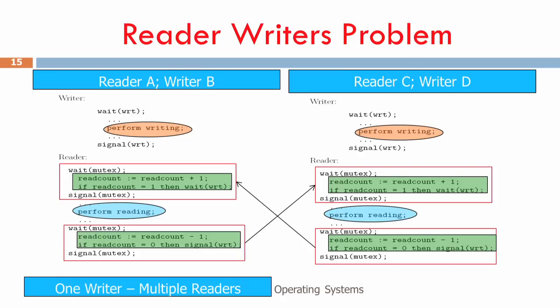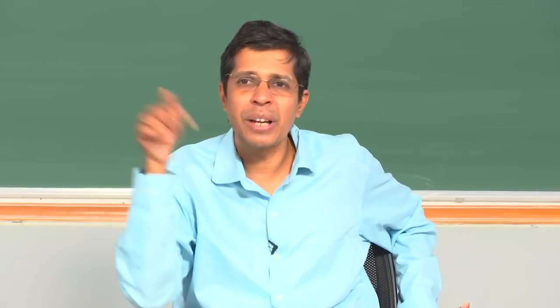There are multiple things to achieve in critical sections. First is mutual exclusion — exactly one or multiple processes depending on the access rule. The second thing is progress: when nobody is in the critical section and I want to enter, I should be allowed to enter. The third is bounded waiting: when I express a wish to access a critical section at time t, within some bounded time t plus delta I should be guaranteed access.